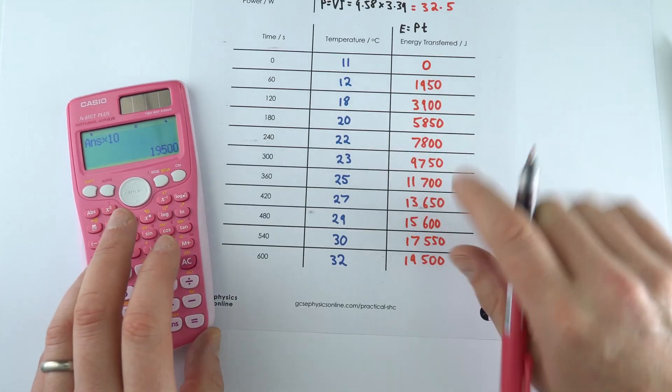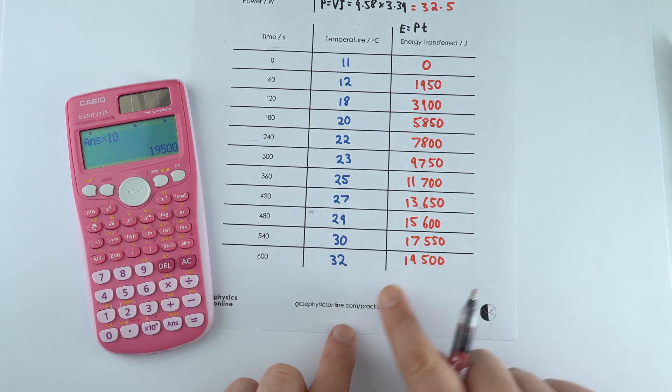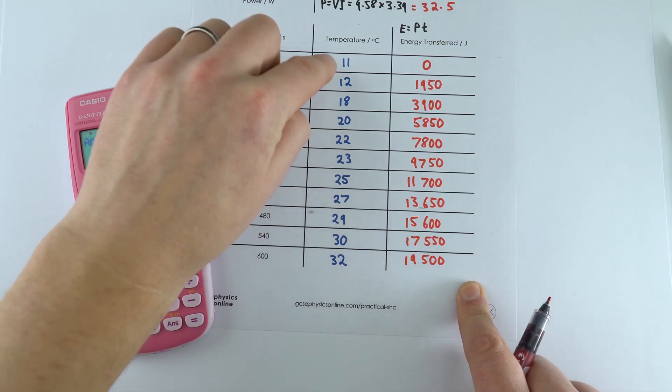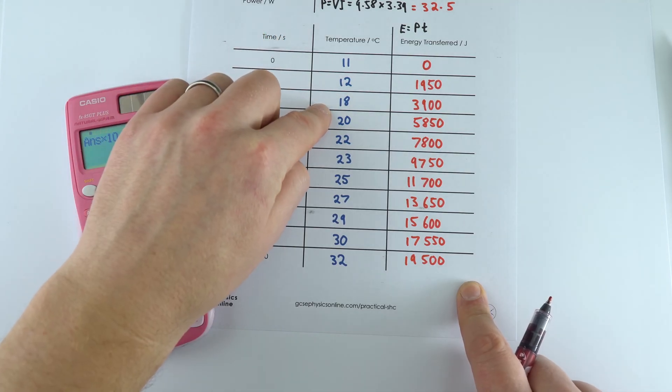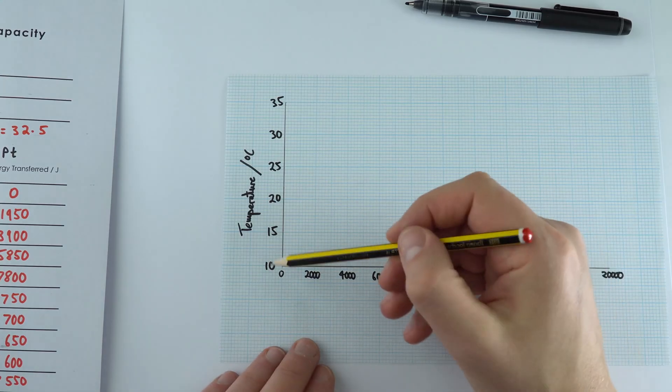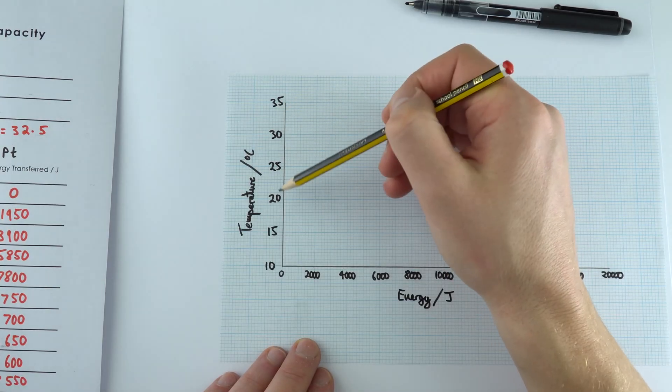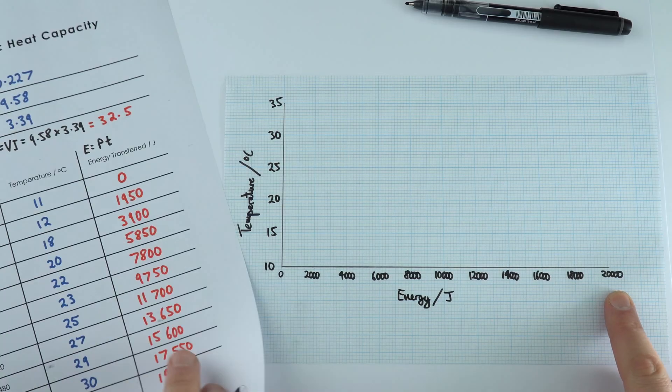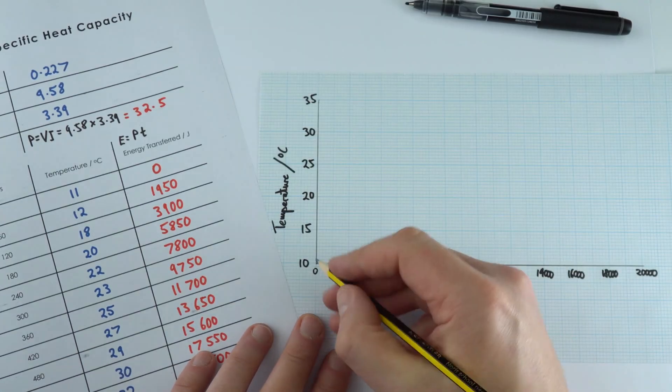So now we've got our values that go up to about 20,000 joules, and we're going to plot this on the x-axis. On the y-axis we're going to have the temperature going from 11 to 32 degrees. I've gone from 10 up to 35 degrees for my temperature and energy going from 0 up to 20,000 joules. So I can now start to plot my data.